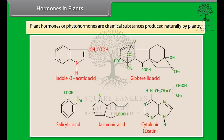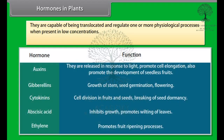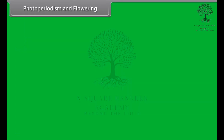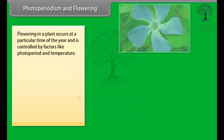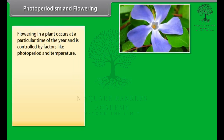Plant hormones, or phytohormones, are chemical substances produced naturally by plants. They are capable of being translocated and regulate one or more physiological processes when present in low concentrations. Plant hormones and their functions are as given in the table.